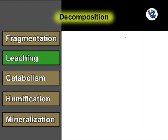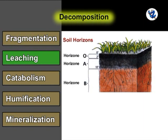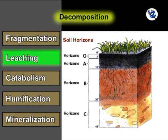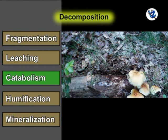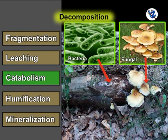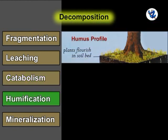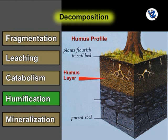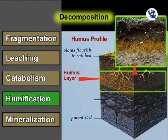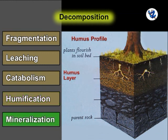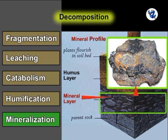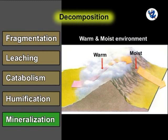Water-soluble inorganic nutrients go down into the soil horizon and get precipitated as salts, which is leaching. Fungal and bacterial enzymes degrade detritus into simple inorganic substances — this is catabolism. Partially decomposed organic matter is called humus, and humification means the formation of humus, which is a dark-colored amorphous substance. It undergoes decomposition at a very slow rate by some microbes, known as mineralization. The rate of decomposition is faster in warm and moist environments.